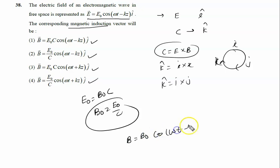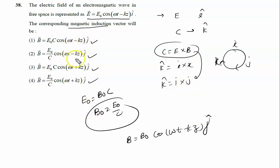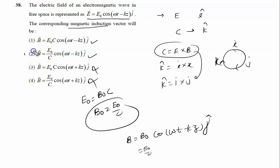The direction of B is ĵ, so we have B = B₀ cos(ωt - kz) ĵ. Checking the options: the expressions with incorrect B₀ values are wrong. Only option 2, which has B = (E₀/c) cos(ωt - kz) ĵ, is correct. So the answer to this problem is option 2.